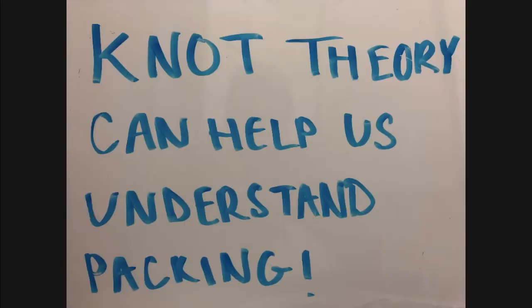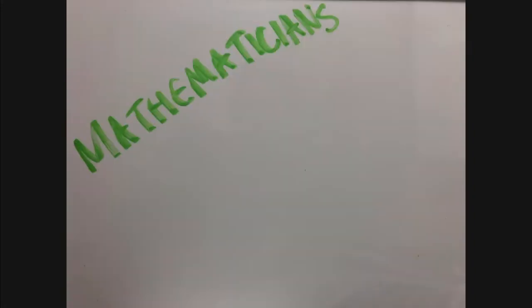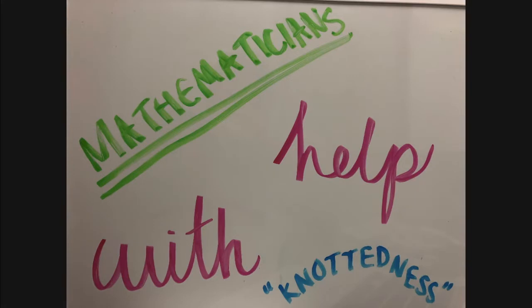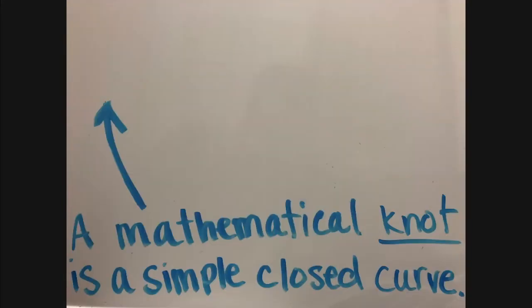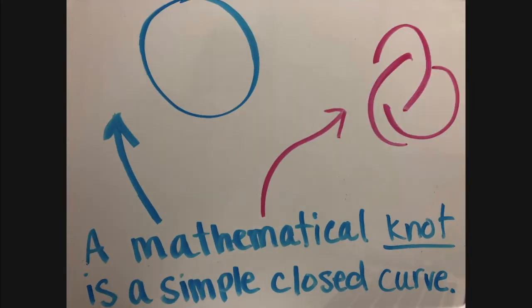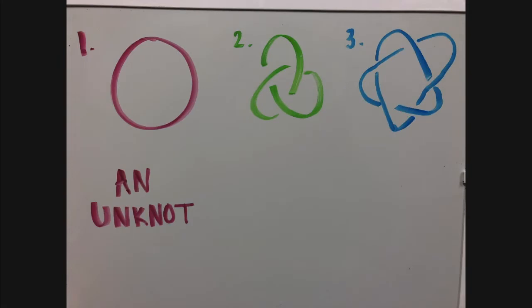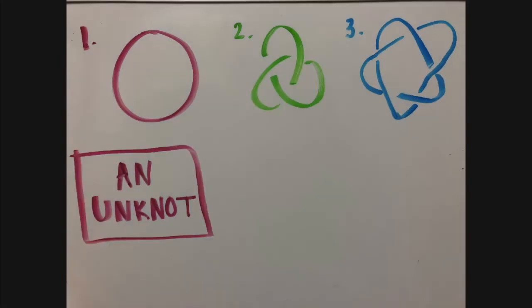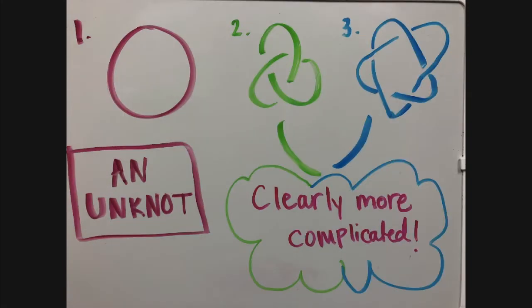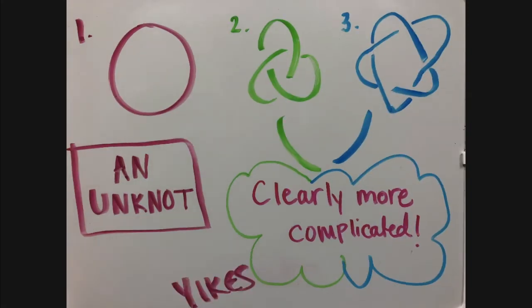Essentially, knot theory can help us understand packing. This is now where mathematicians come into play and they get to help us find ways to compare the knottedness of two molecules. A knot is defined as a simple closed curve in space, as seen in the blue and pink drawings. Here are three knots: the first knot is just a loop of string that forms a single loop called an unknot, but the second knot is clearly a knot that won't untie, and the third knot is even more complicated than the second.